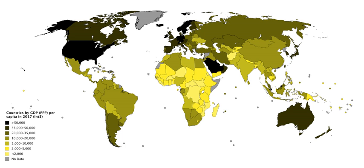Another important area that does not necessarily improve along with GDP is political liberty, which is most notable in China, where GDP growth is strong yet political liberties are heavily restricted. GDP does not account for the distribution of income among the residents of a country, because GDP is merely an aggregate measure. An economy may be highly developed or growing rapidly, but also contain a wide gap between the rich and the poor. These inequalities often occur on the lines of race, ethnicity, gender, religion, or other minority status within countries. This can lead to misleading characterizations of economic well-being if the income distribution is heavily skewed toward the high end.